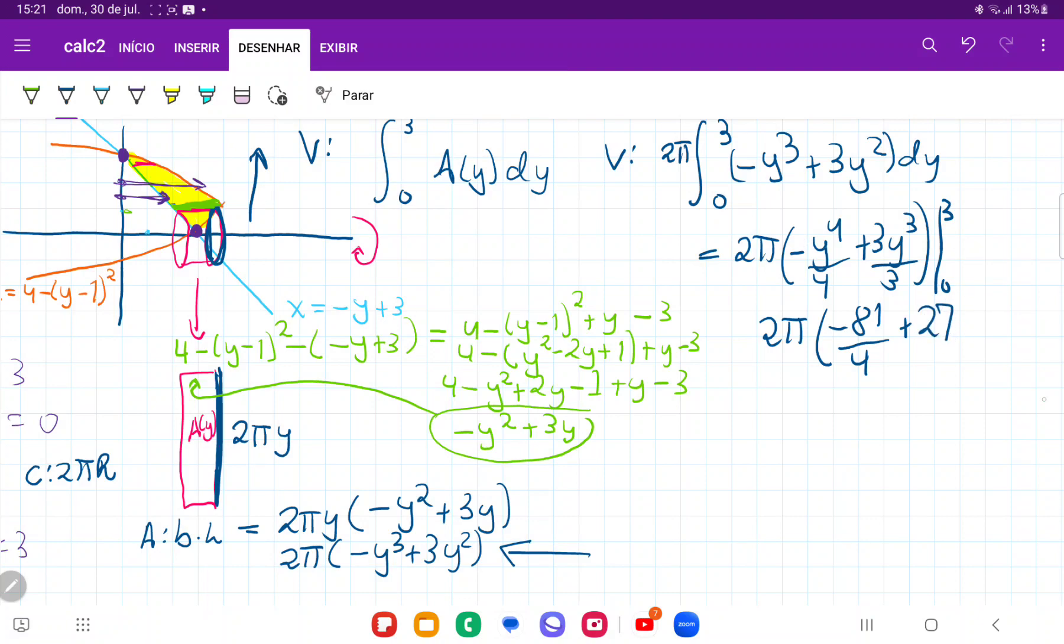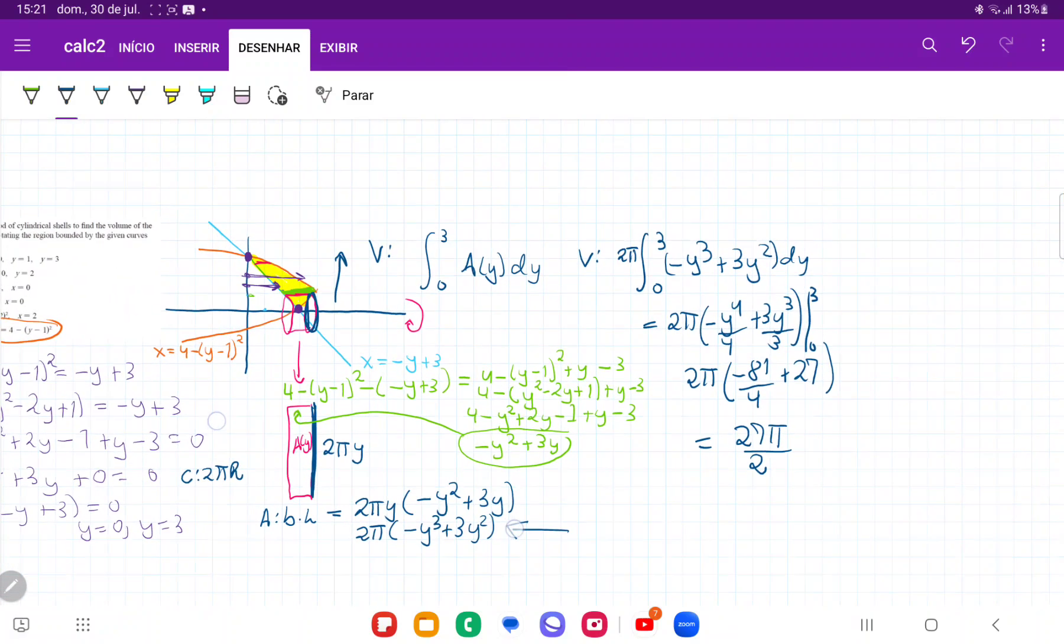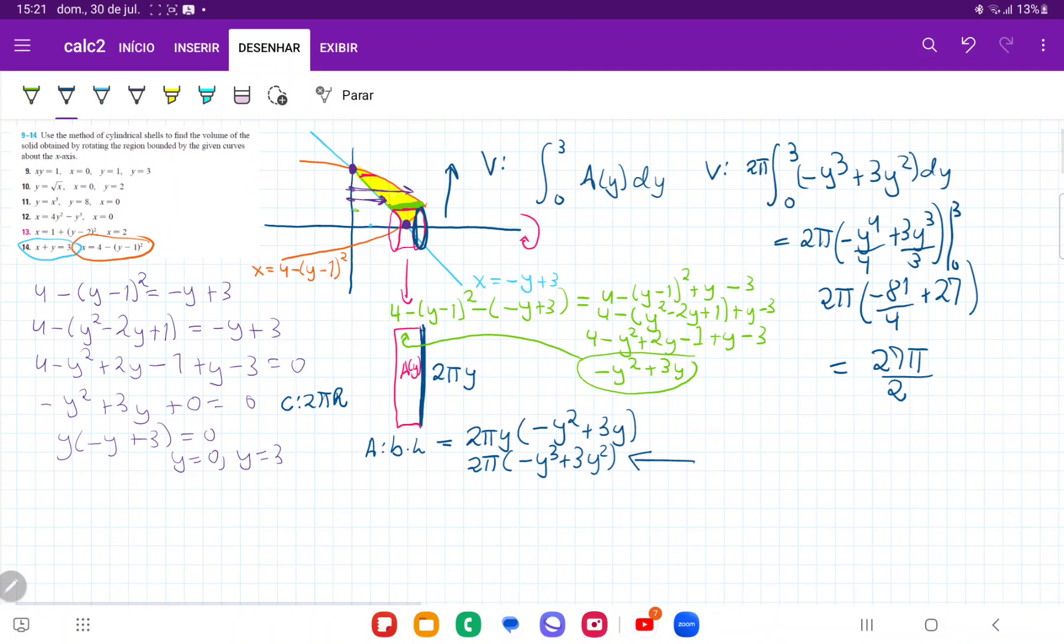And then the 0 is going to disappear, so I don't need to evaluate that. And so the answer gives me, if I put this in my calculator, that gives me 27π over 2. And that is the volume that I get when I take this area and I revolve it about the x-axis by summing up the area of each cylinder.